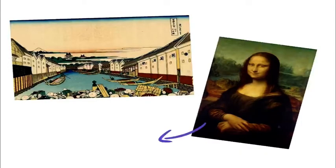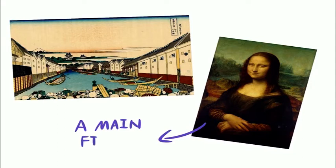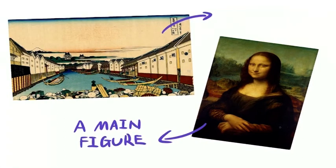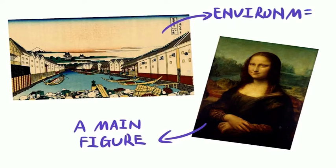These cultural differences in thinking style even influence Western and Eastern people's perceptual experiences. Looking at those two paintings for example, you can see the Western painting focused on a main figure while the Eastern painting portrays the overall environment rather than a central object or person.